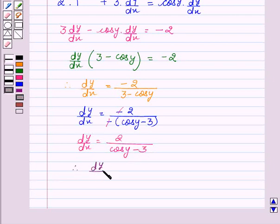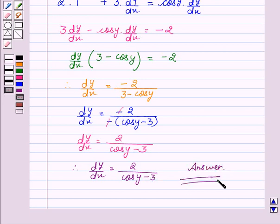Therefore, dy/dx equal to 2 upon (cos y - 3), which is the required solution. Hope you understood it and enjoyed the session. Goodbye and take care.